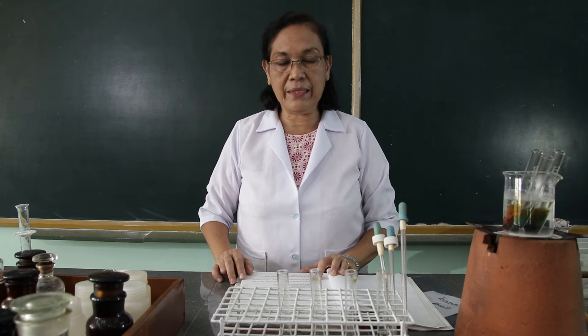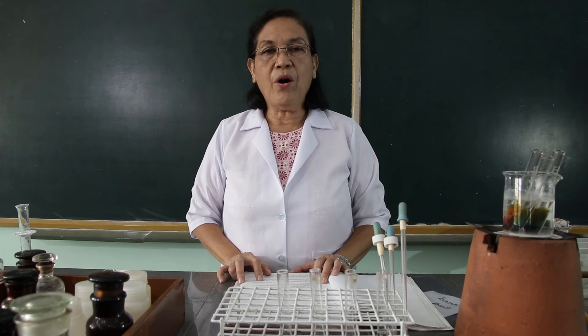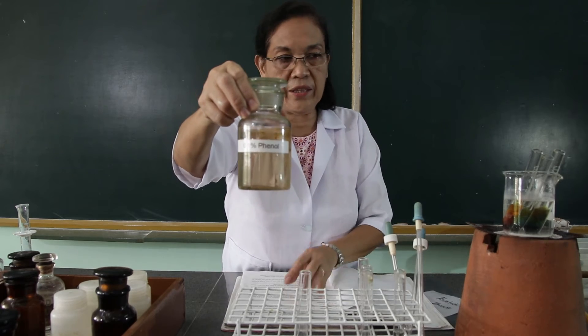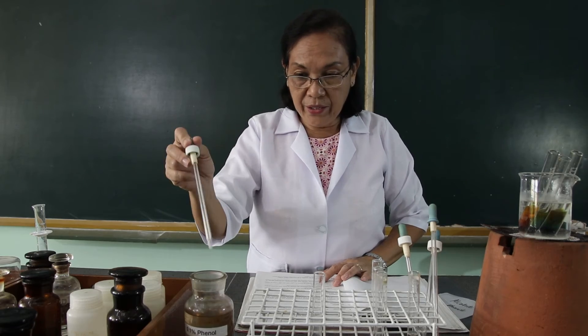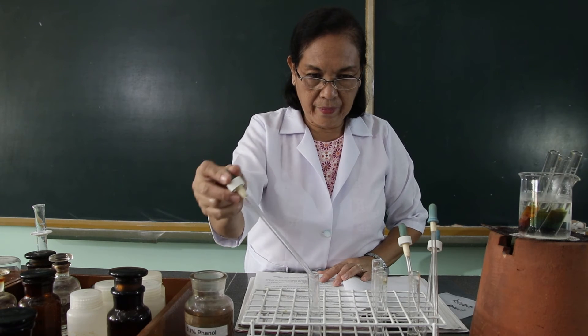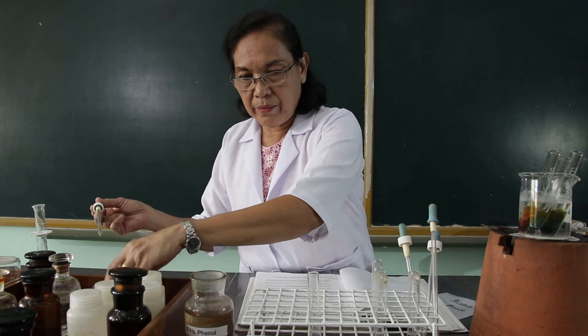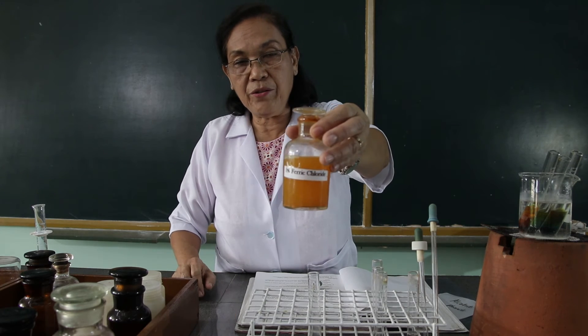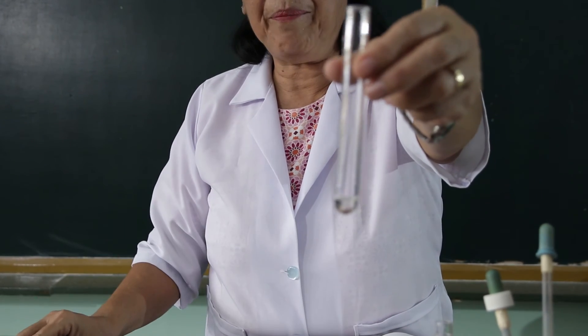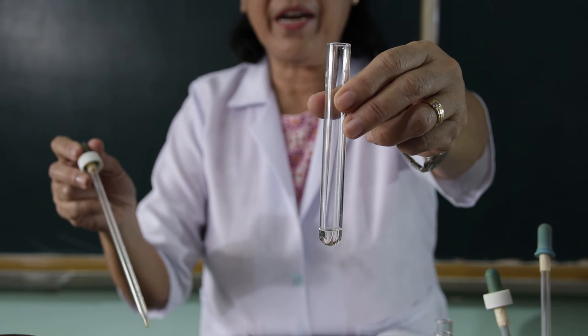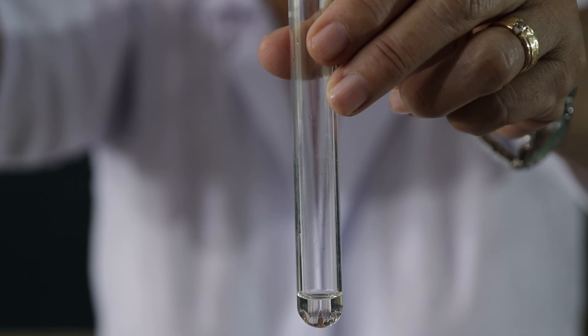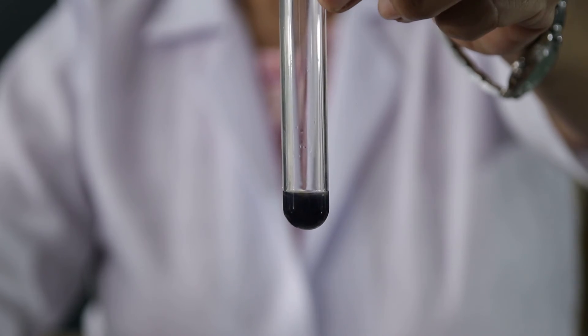For the third part of the activity, we're going to test the reaction of phenol towards ferric chloride — this is what we call the ferric chloride color test. Using 1 ml of the 0.1% phenol, we're going to add one drop of the ferric chloride solution. Observe what happens when I drop the ferric chloride onto the phenol. What happens to the color?